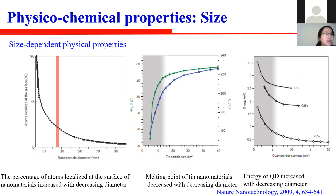For example, the band gap energy corresponding to the fluorescence wavelengths increases as the diameter decreases below 6 to 8 nanometers. Another example is the melting point: when particle size decreases from 100 to 10 nanometers, the melting point is reduced by 80 degrees.